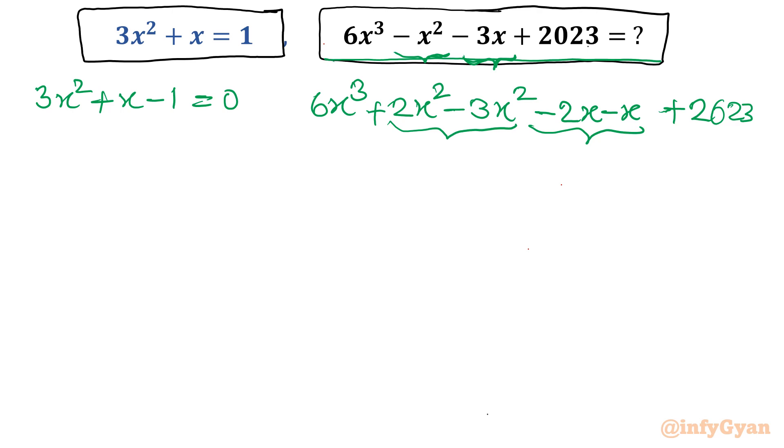Now what I am going to consider. I will consider 6x cube, let me write here: 6x cube plus 2x square minus 2x. I have taken this term, this term, and this term altogether. And rest as it is: minus 3x square minus x plus 2023.